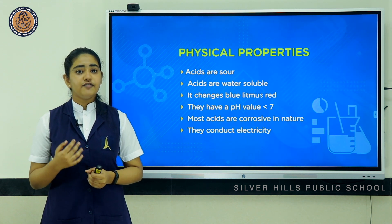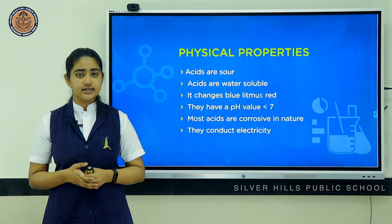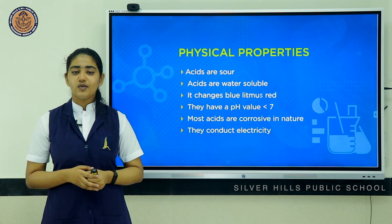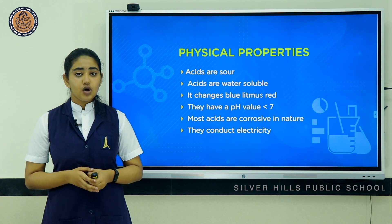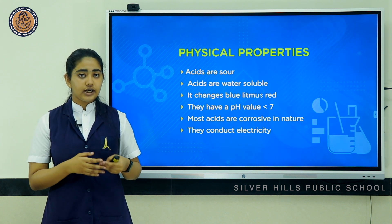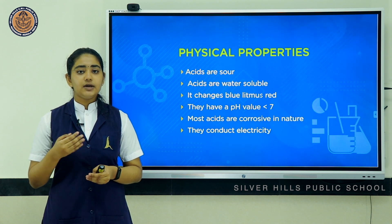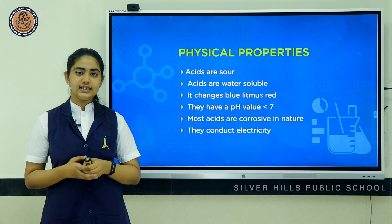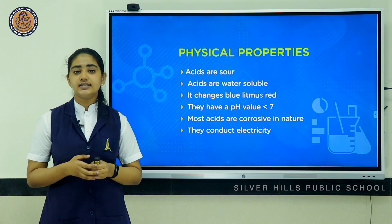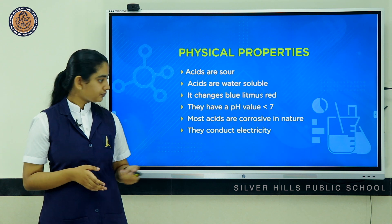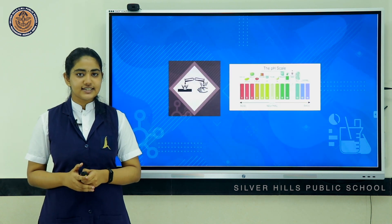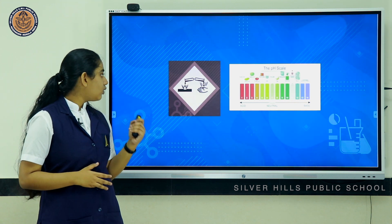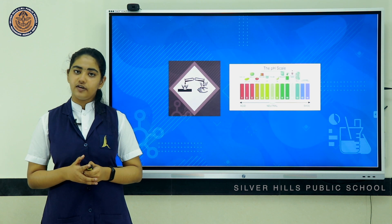If you remember, when we were doing the electrolysis of water, we add a few drops of acid into the water. Why is that done? Pure water is a poor conductor of electricity, so to make it a better conductor, we add a few drops of acid. This example shows that acids conduct electricity. Here we have the pH scale ranging from 0 to 14 and a warning which shows the corrosive property of acids.